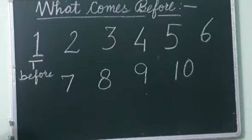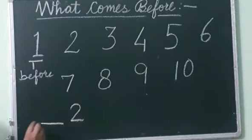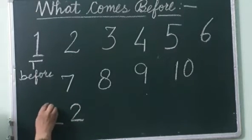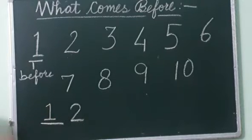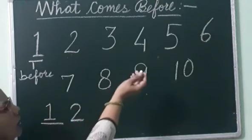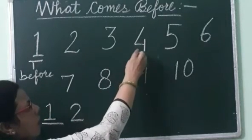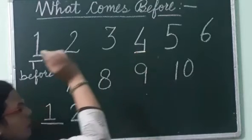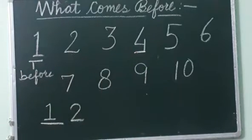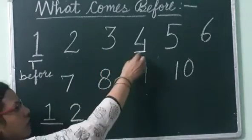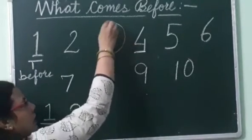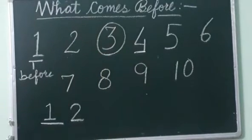So if someone asks you what comes before 2, so what is the number which comes before 2? You have to write 1. Is it clear? Same way, if the question is what comes before 4, which number comes before 4? 3. Which comes before 4? 3. This comes before 4.